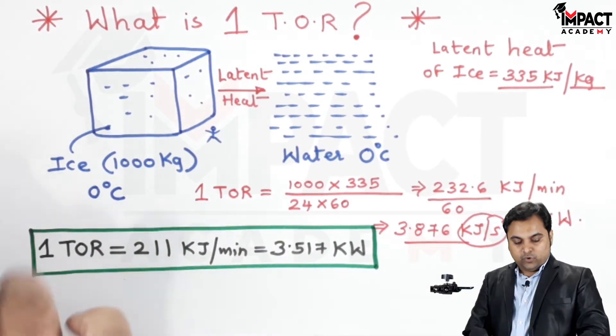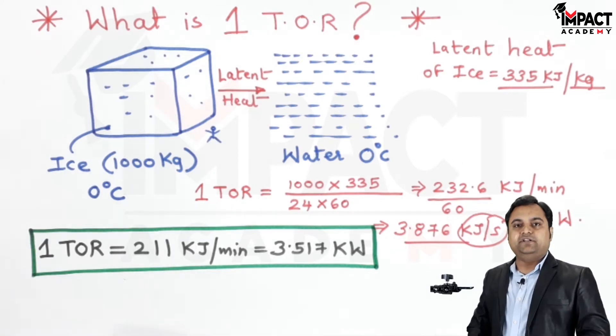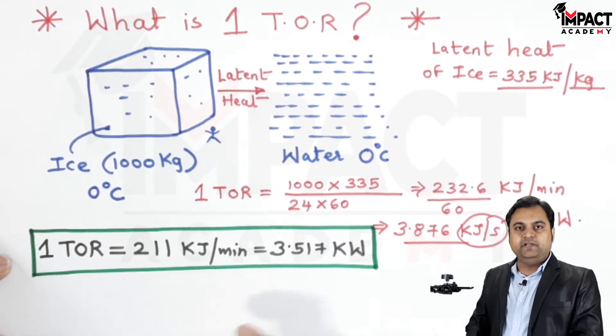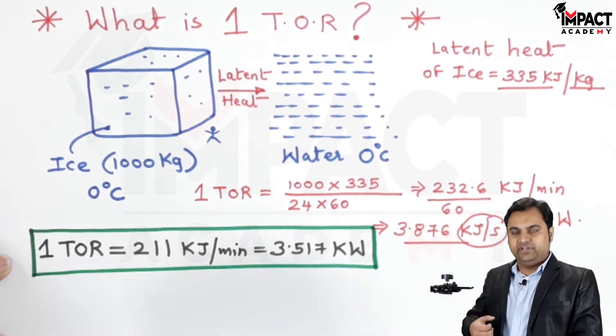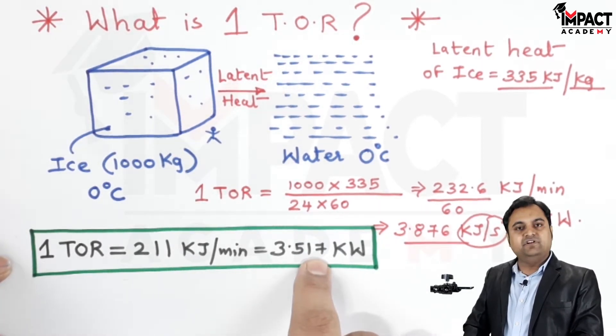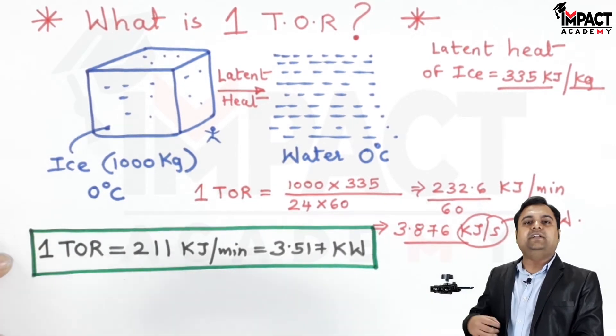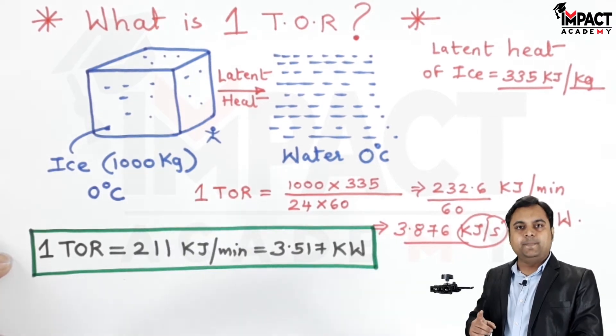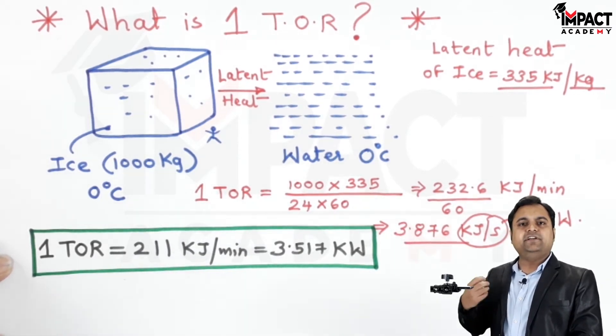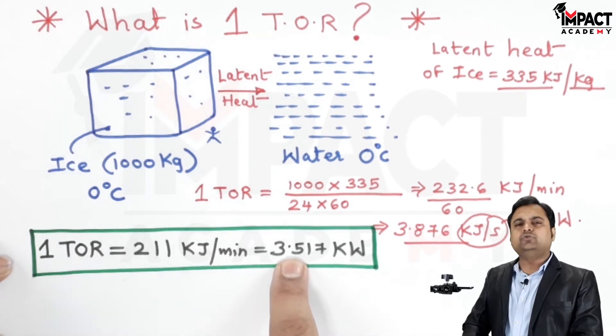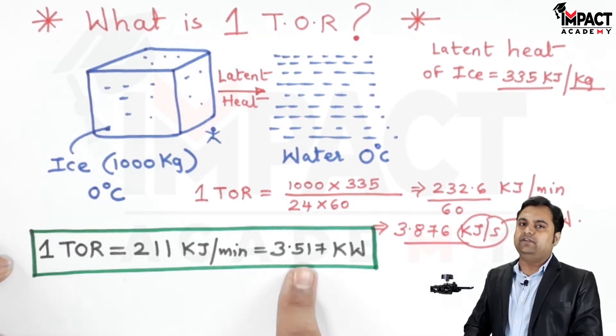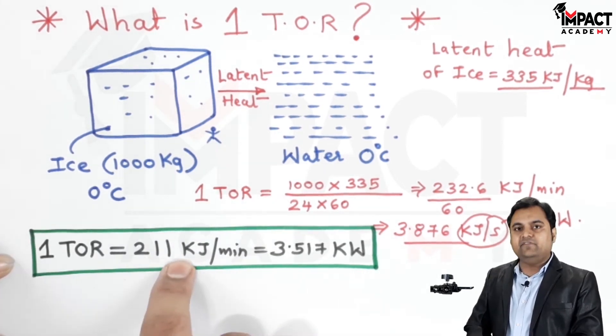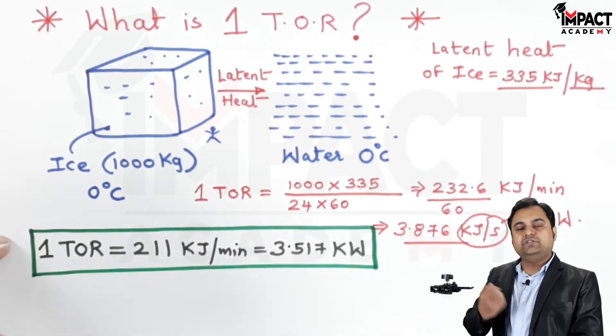Whenever we talk about one ton of refrigeration, it means such a system would be continuously absorbing heat of 3.517 kilojoules per second from the required space. If we are having an AC of one ton, that one ton AC would be removing heat from the room equivalent to 3.517 kilojoules in one second, or in a minute that AC would be removing 211 kilojoules from the room.